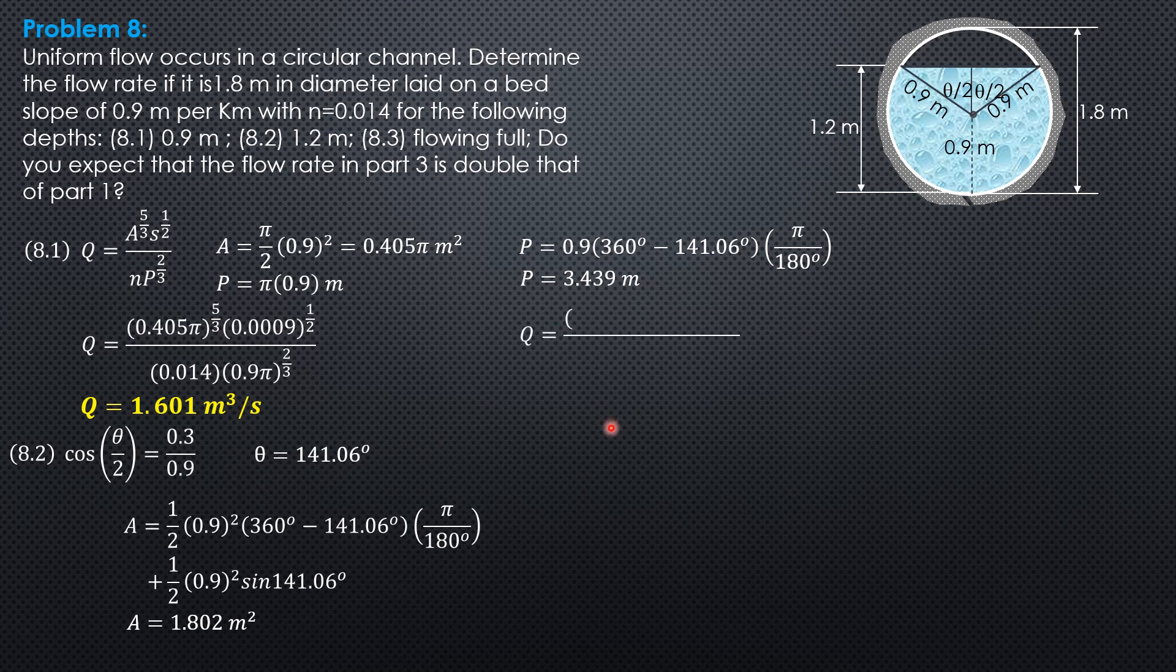So we now substitute. Q equals 1.802 to the 5 thirds quantity 0.0009 to the 1 half over 0.014 times 3.439 to the 2 thirds. So the discharge is 2.510 cubic meters per second.